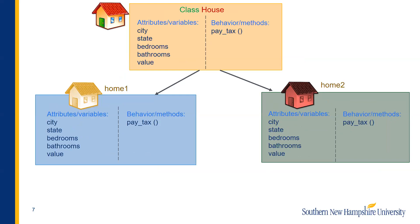Let's consider another example — a class called House. It has some attributes: city, state, bedrooms, bathrooms, and the value. It has a method: pay tax. I could create an object called home one, and home one will have some values for the state, city, bedrooms, bathrooms, and value associated with it. I could create another object called home two, and the values for the state, city, bedrooms, bathrooms, and value for home two will be associated with that object.